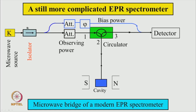We have also put an isolator here, and its job is to make sure that microwave radiation goes only in the forward direction. Any reflection from downstream is blocked by the isolator so that reflected radiation does not reach the microwave source and cause interference. The cavity is kept in the magnetic field, and this completes the spectrometer - that is the way a modern EPR spectrometer looks like.